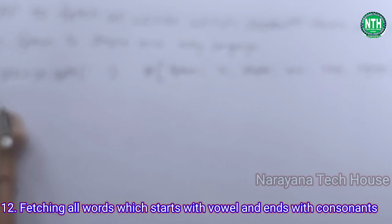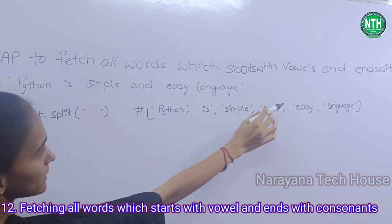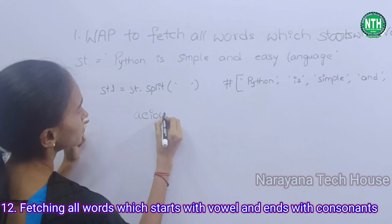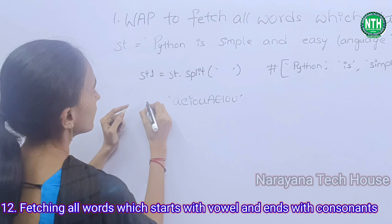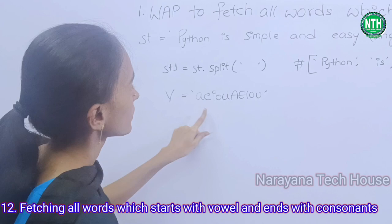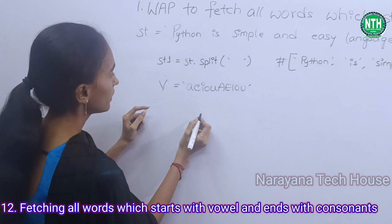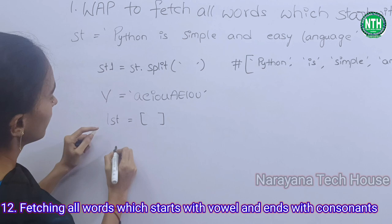Now the question is: fetch all words which start with vowels. Vowels means A, E, I, O, U — assigned to one variable V. The remaining letters are called consonants. Let's take one empty list.